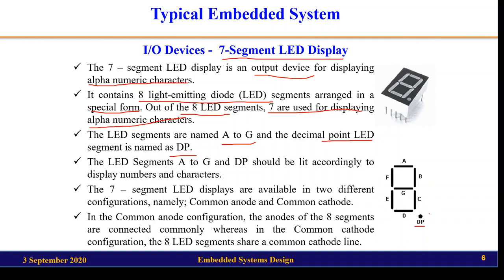The seven segments A through G and the DP are arranged in a special form and can be used to indicate numbers or alphabets. For example, to display the number 1, only B and C LEDs need to be on. To display 0, LEDs A, B, C, D, E, and F all need to be on. Based on the requirement to display a particular alphanumeric character, the appropriate LEDs are turned on.